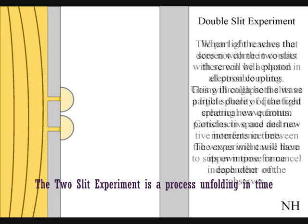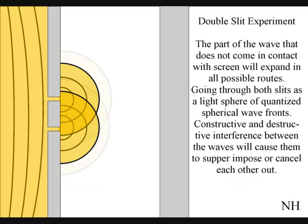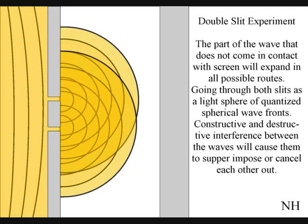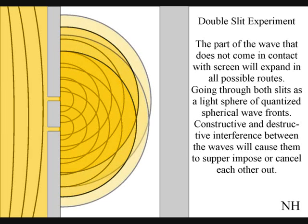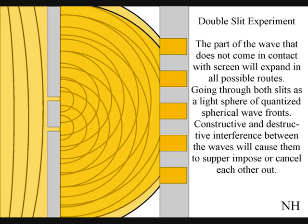The part of the wave that does not come in contact with the screen will expand in all possible routes, going through both slits as two wave-fronts. Interference between the waves will cause them to superimpose or cancel each other out. When these waves come in contact with the screen, they will collapse, creating quantum particles in space and time in the shape of an interference pattern.